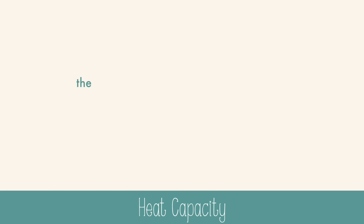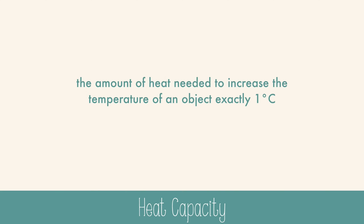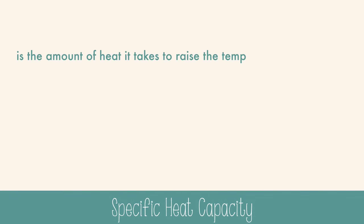Every object can be heated up. The amount of heat needed to increase the temperature of an object by exactly one degree Celsius is called heat capacity. Different objects will have different heat capacities based on their mass and chemical composition. So, to really account for the mass, we need to use something else called specific heat capacity.